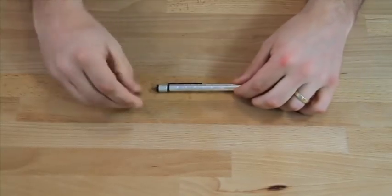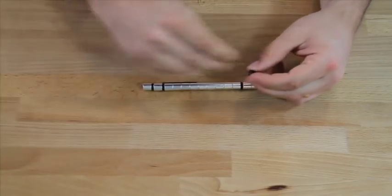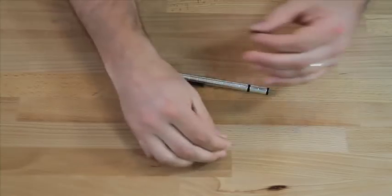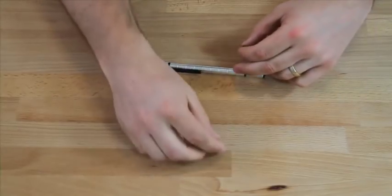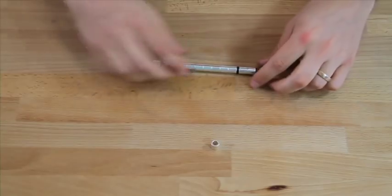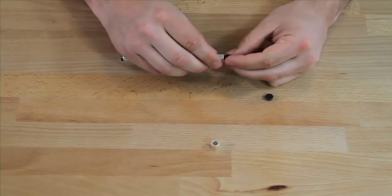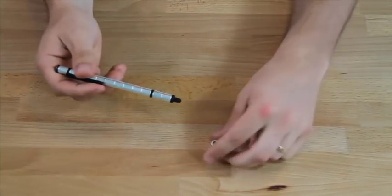So the stylus component can be added onto either end. It doesn't really matter. Hopefully it'll stay there. So we'll just put it onto the end with the cap or where the pen is. So it just snaps on like any of the other components.